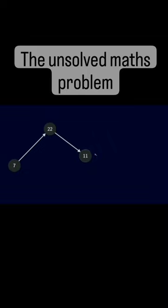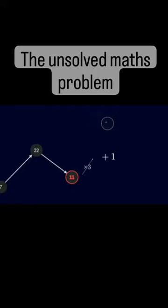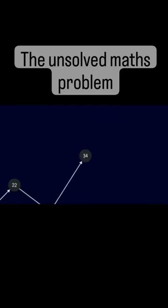Now we keep applying these two rules. 11 is odd, so we multiply by 3, 33, and add 1, 34.